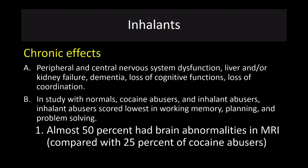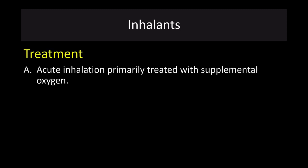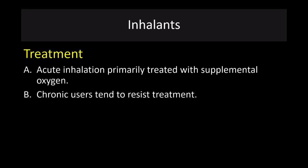If you have kids, talk with them about inhalants, put these things out of their reach, and make sure that they don't have access to them. Treatment for inhalant abuse includes basically supplemental oxygen if they have acute inhalation problems, just to keep their oxygen flow going. Chronic users tend to be very resistant to treatment, and the best treatment is prevention — keep kids from engaging in this kind of behavior. It may be something they grow out of, but you really want to be mindful of this kind of abuse.